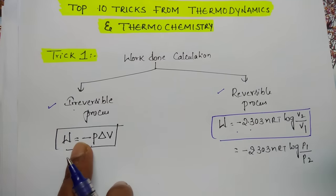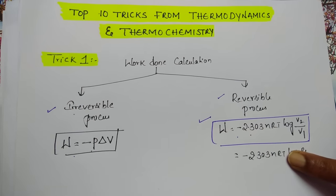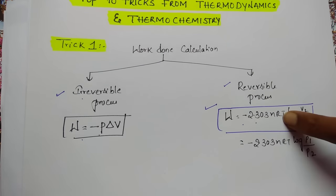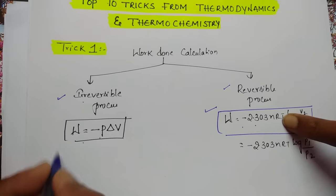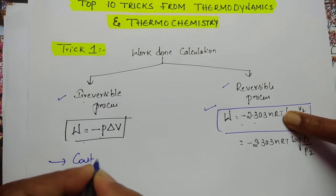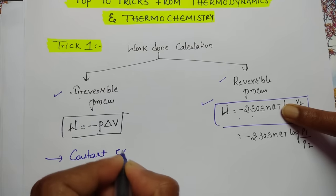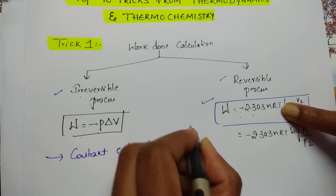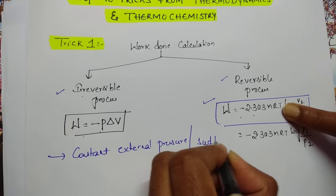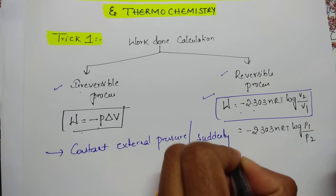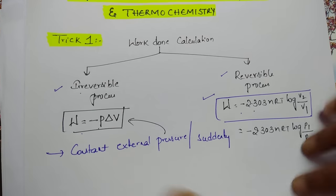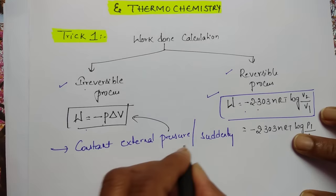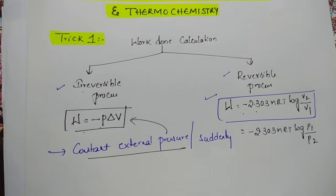When no reversible or irreversible is given, you use the isothermal reversible process formula. But if any phrase like 'constant external pressure' or the word 'suddenly' is given in the question, then you use W = -PΔV. Simply use this trick to decide which formula to apply.